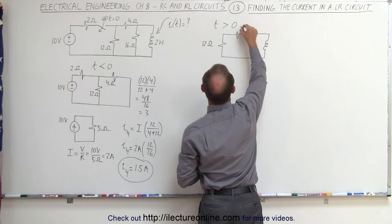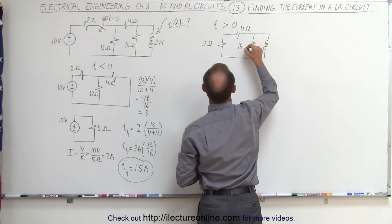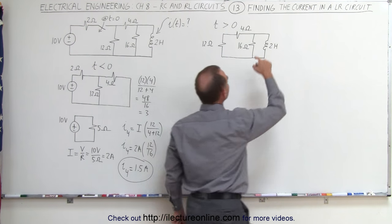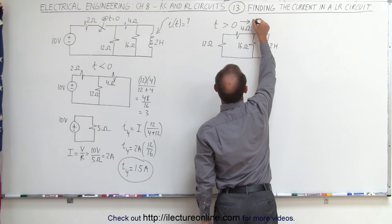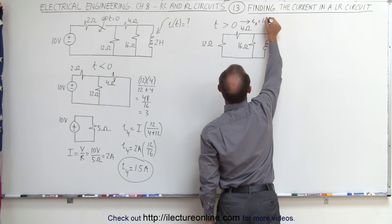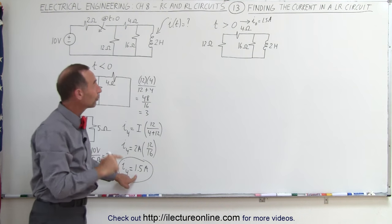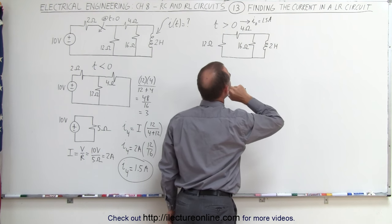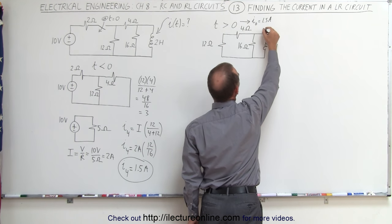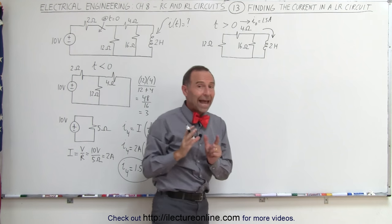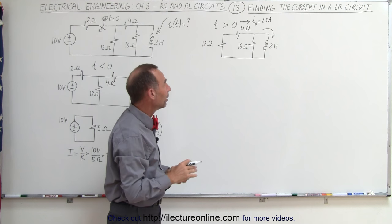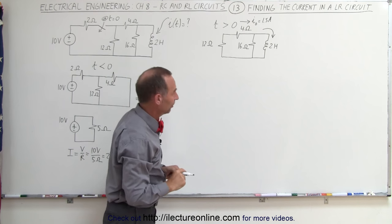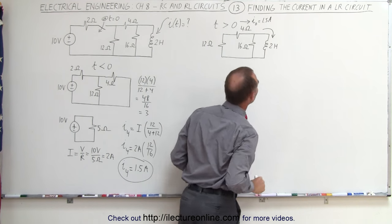That gives us 12 ohms, 4 ohms, 16 ohms, and a 2 Henry inductor. Now remember, the initial current flowing through here — let's call it I initial — that's equal to 1.5 amps. That's the current to the 4 ohm resistor. Notice that all of that current initially went through the inductor, because the inductor acts as a short after current has been flowing for a while — the inductor only opposes a change in current, so none of it would have gone to the 16 ohm resistor. So the initial current through the inductor will indeed be 1.5 amps.